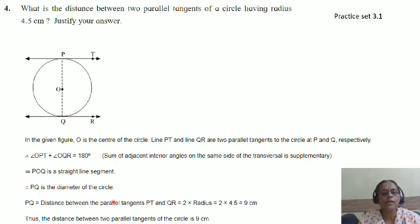PQ is the diameter of the circle, and PQ is the distance between two parallel tangents PT and QR, which is twice the radius. So, 2 into 4.5, you have 9 cm. The distance between two parallel tangents of a circle is 9 cm.